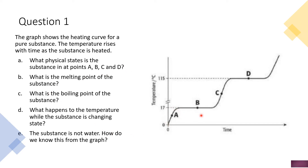The sub-questions are: Part A — what physical state is the substance in at points A, B, C and D? Part B — what is the melting point of the substance? Part C — what is the boiling point of the substance? Part D — what happens to the temperature while the substance is changing state? Part E — the substance is not water; how do we know this from the graph?